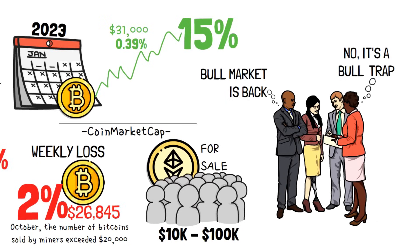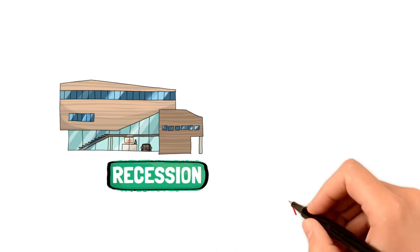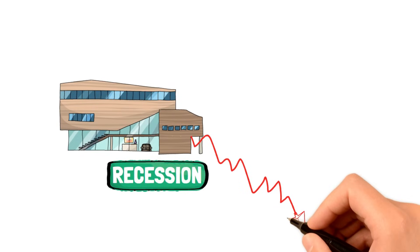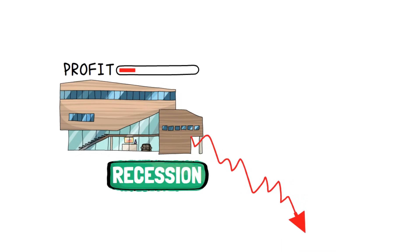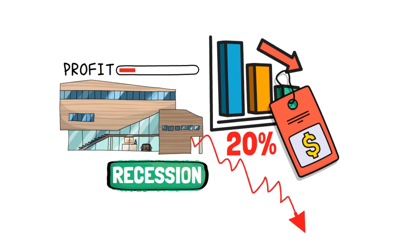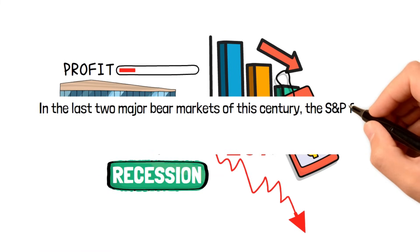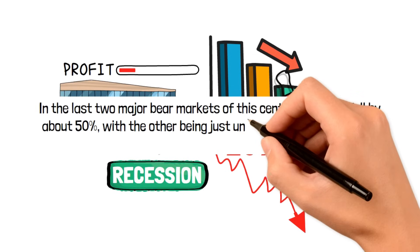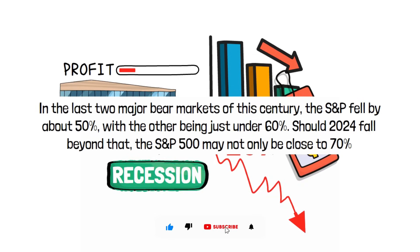With all of these points that we've discussed, let's talk about the possibility of a recession happening next year. If Grantham is right and a prolonged recession plays out, we should all expect companies to make continually low returns and the bear market to be significant. History has shown that bear markets typically occur when stock prices decline by at least 20% from their recent highs and are also followed up by pessimism and an overall lack of investor confidence. You may want to brace yourselves because in the last two major bear markets of this century, the S&P fell by about 50%, with the other being just under 60%. Should 2024 fall beyond that, the S&P 500 may not only be close to 70%, but will also be the worst plunge in history.